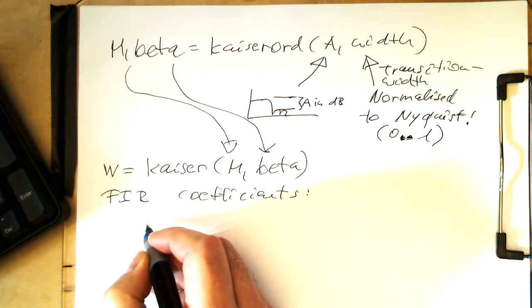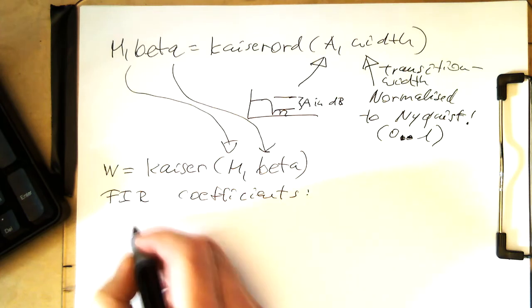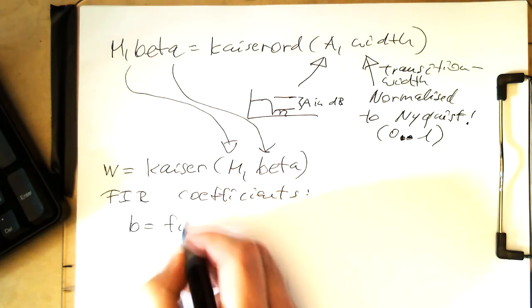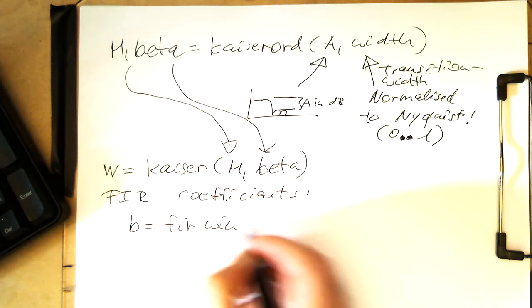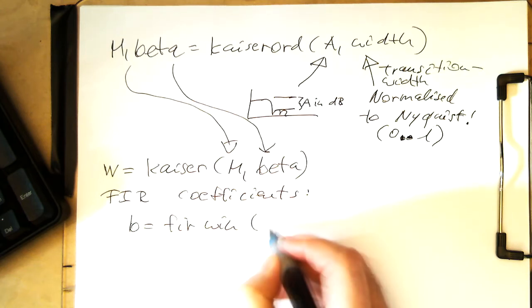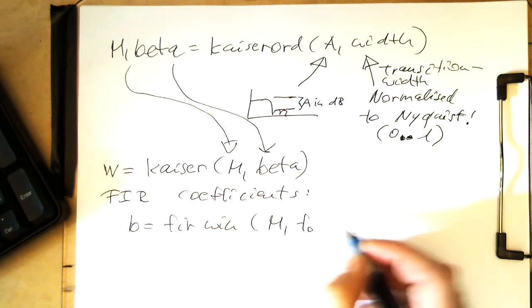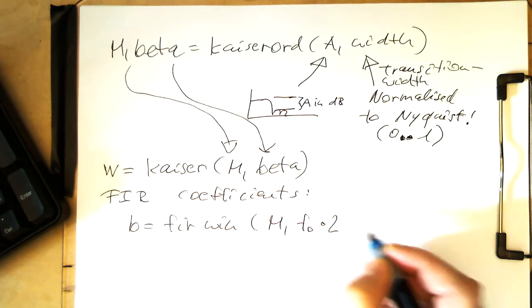You just do this with the firwin command. B equals firwin. And then M. So it's again, our same M here. Let's say we want to have a low pass characteristic.